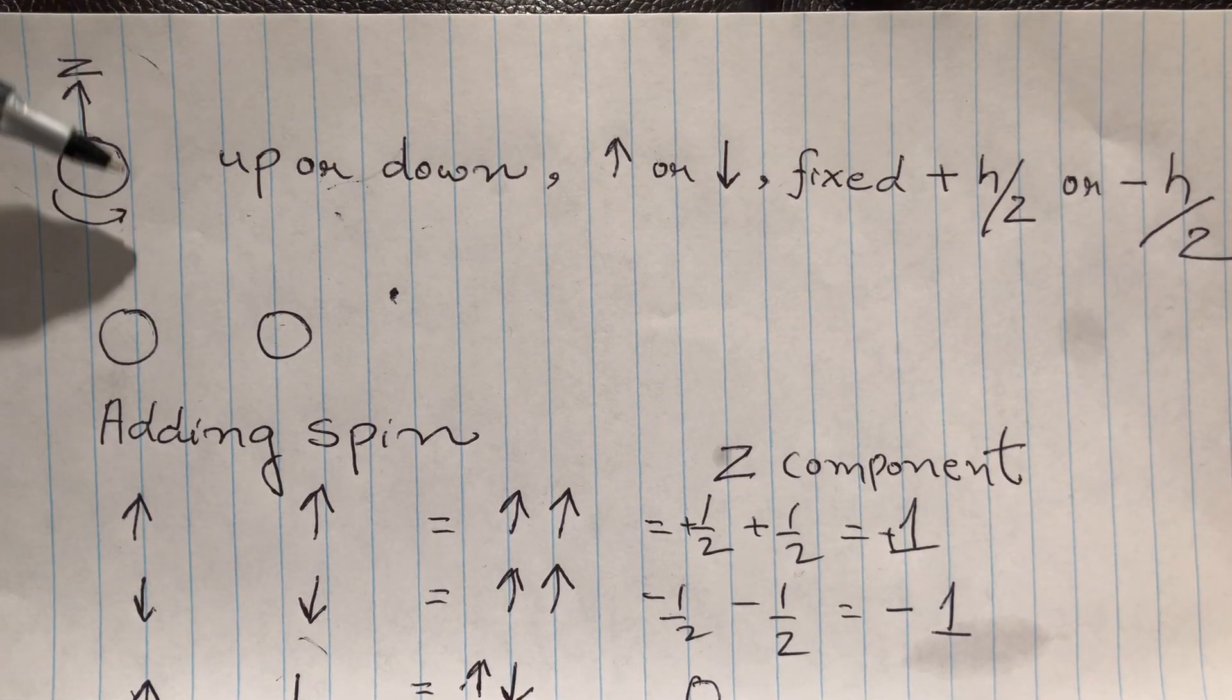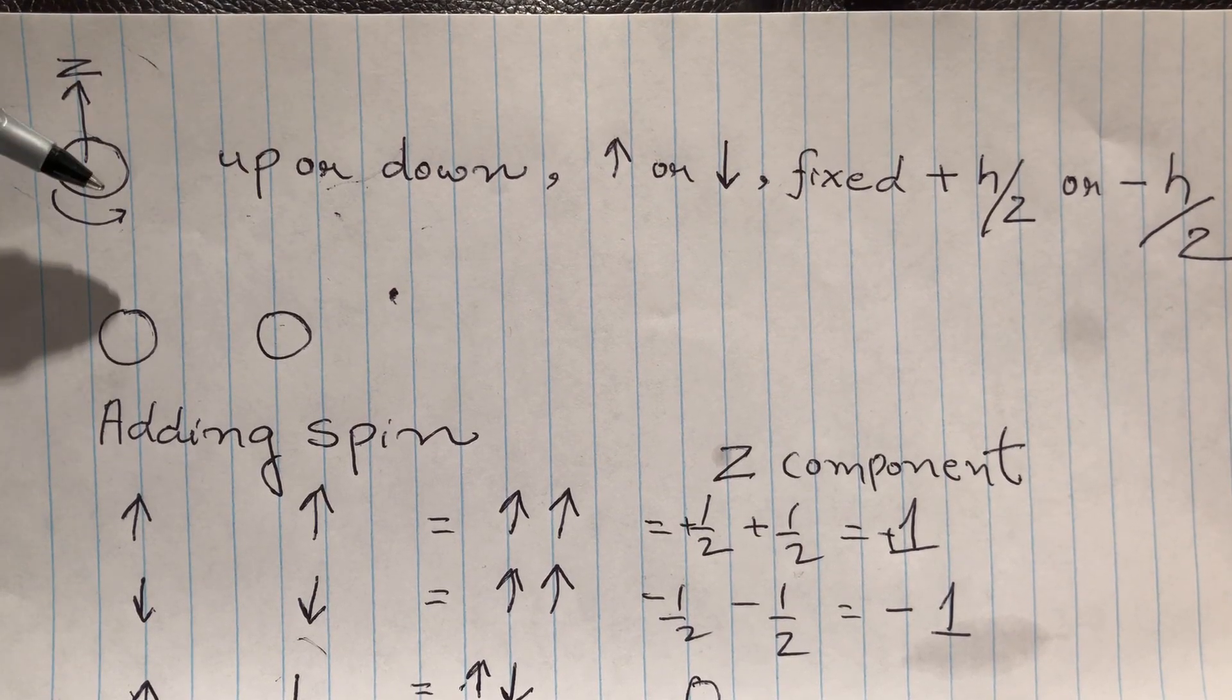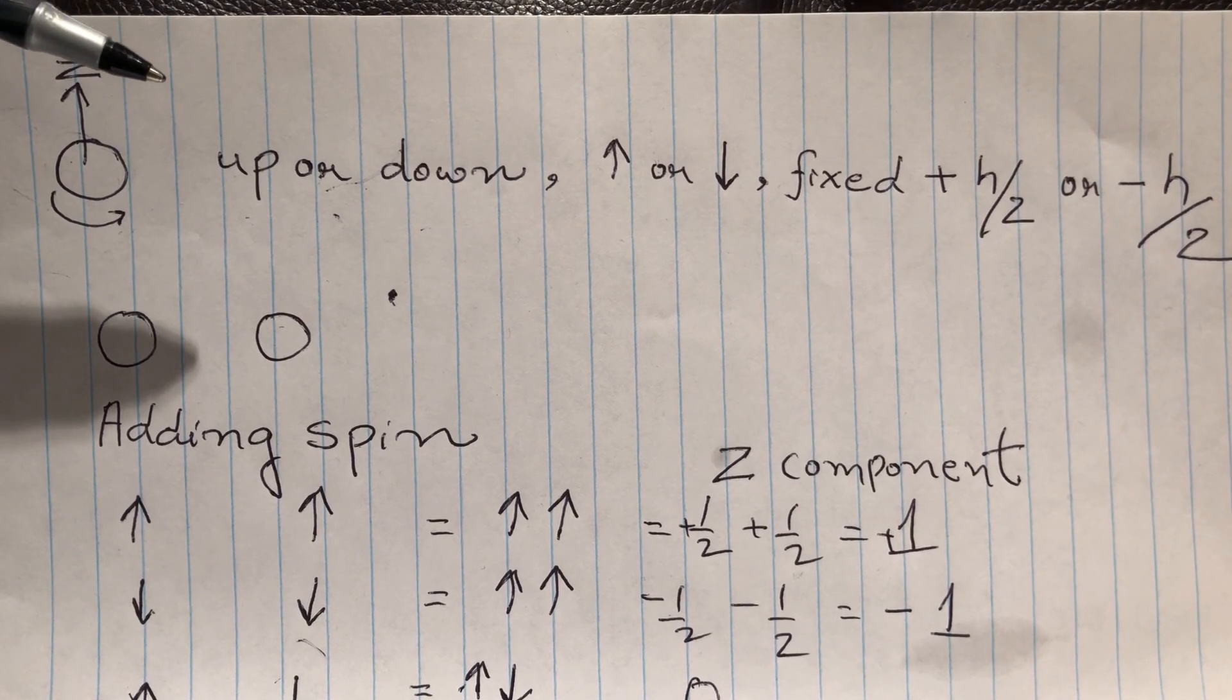Usually if it's a ball, you can make it slow or you can make it faster. But electron spin, you cannot.